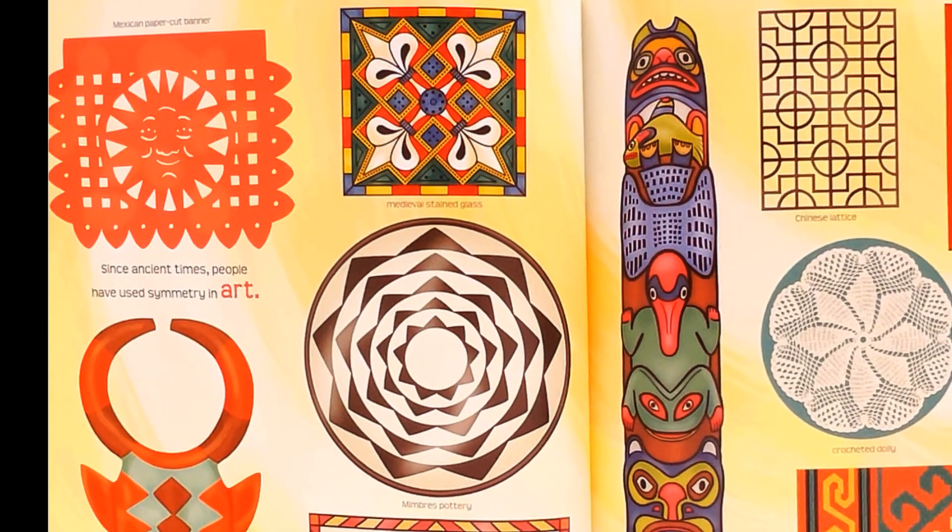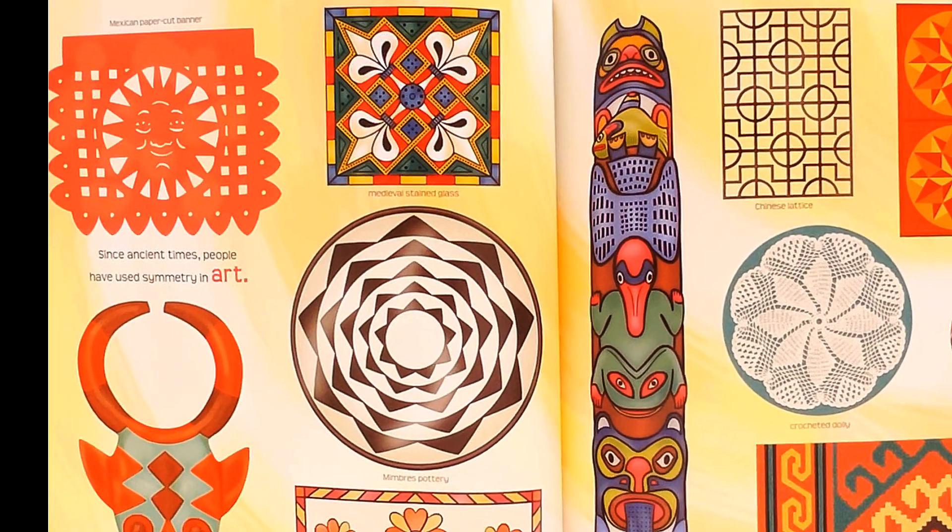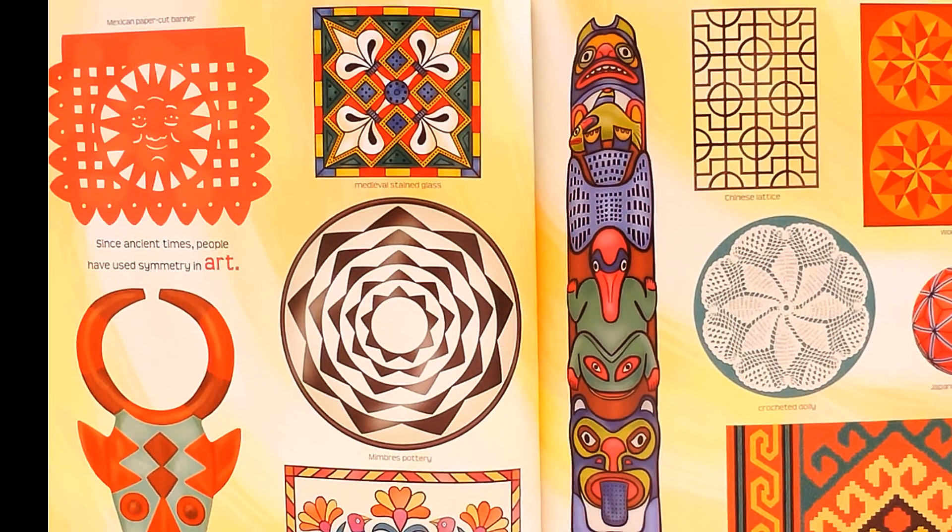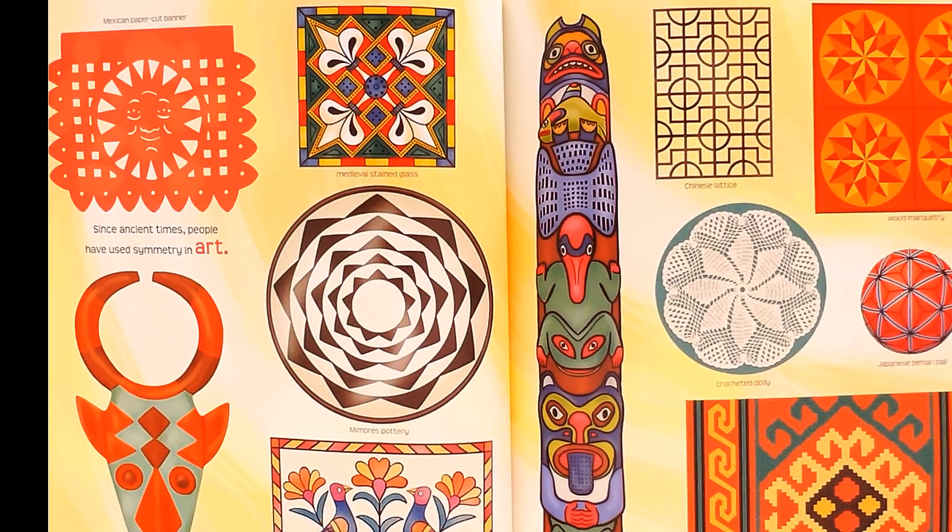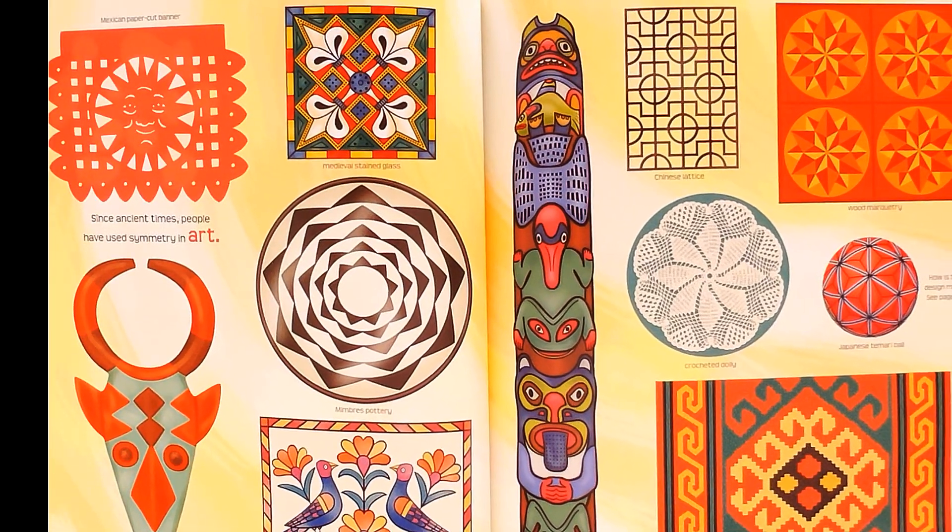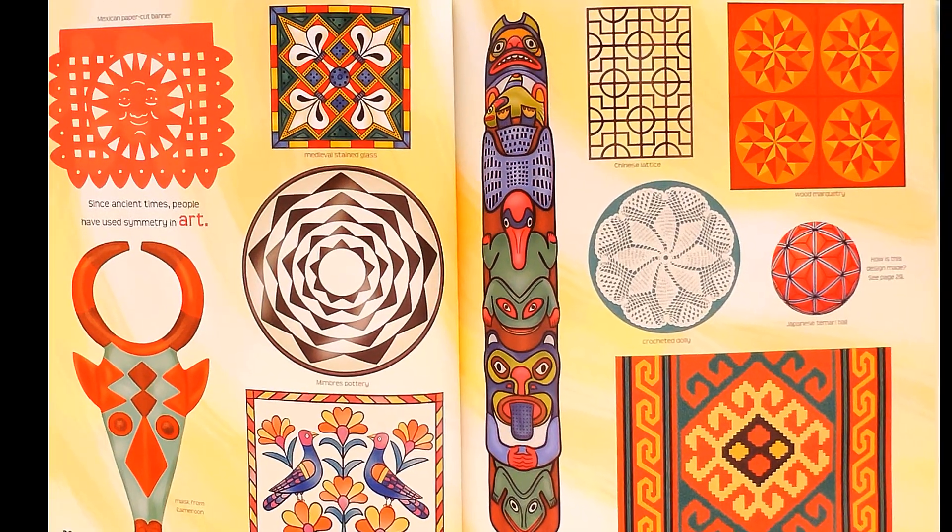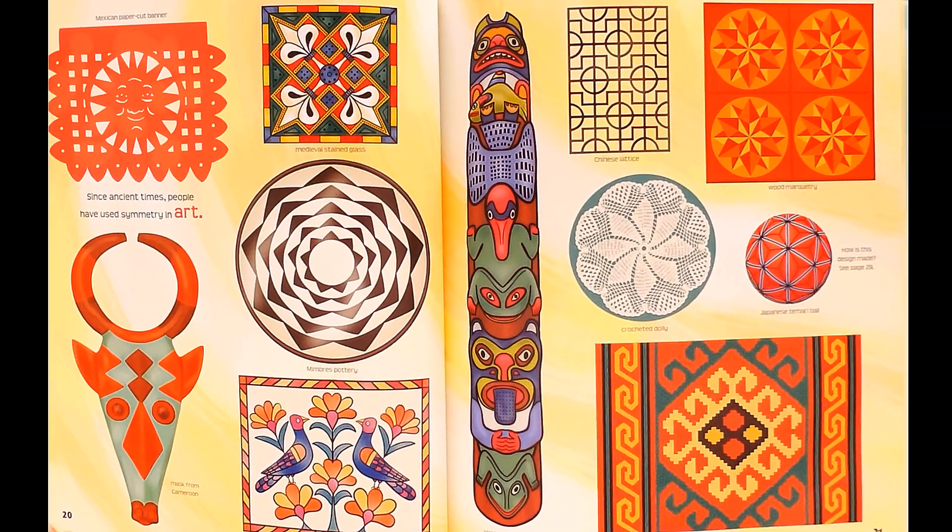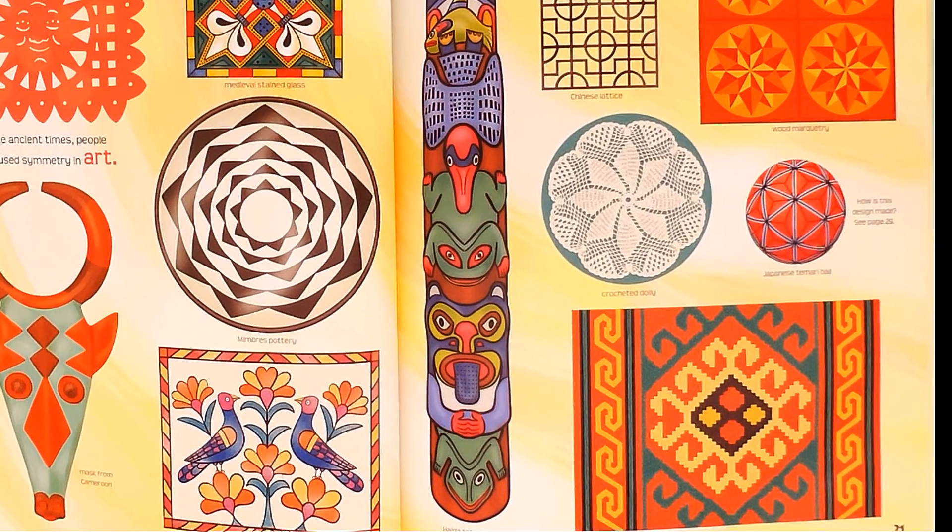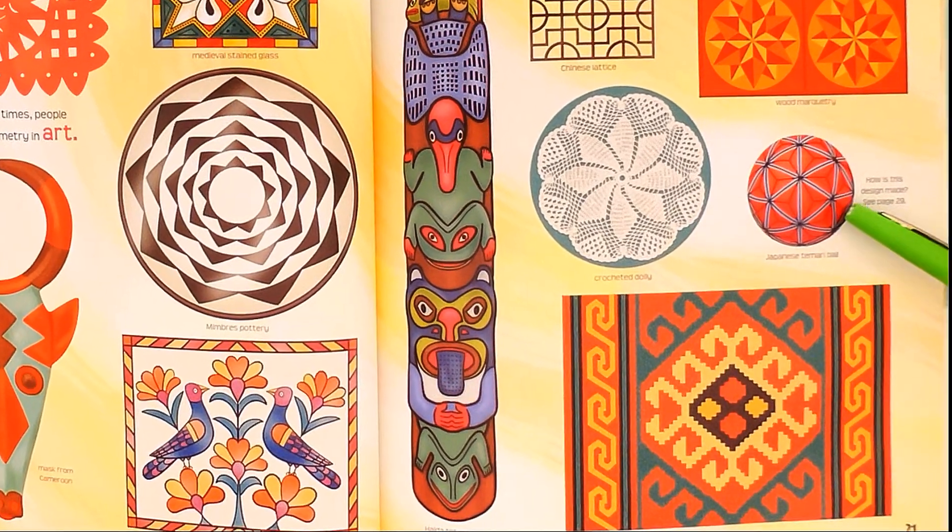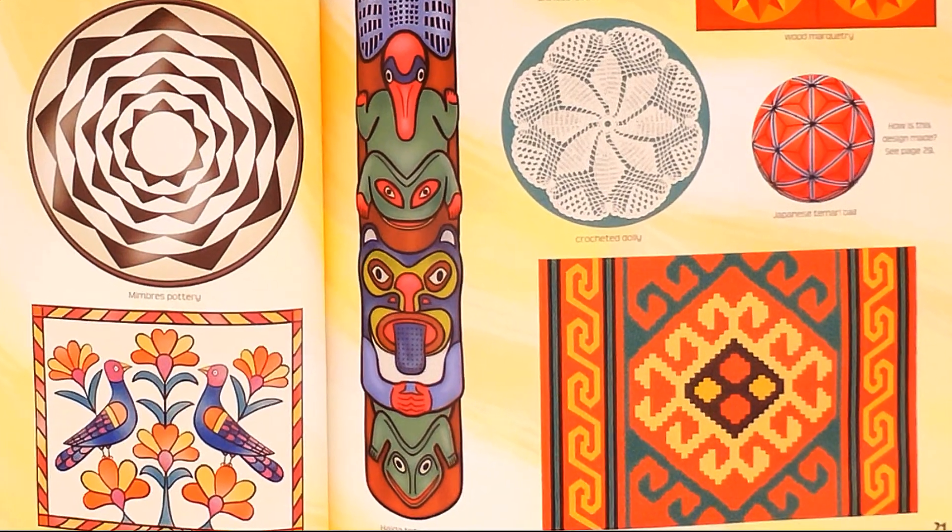Since ancient times, people have used symmetry in art. Mexican paper cut banner, medieval stained glass, pottery, mask from Cameroon, Pennsylvania and German Fraktur painting, Chinese lattice, Haida totem pole, crocheted doily, wood marquetry. How is this design made? See page 29. The Japanese temari ball and Turkish kilim rug.